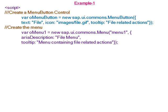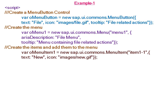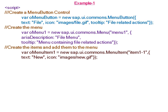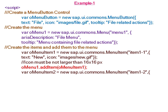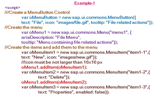Now we create the menu for this menu button with description 'File Menu' and a tooltip. We add three menu items to this menu: the first with text 'New' and an icon, the second with text 'Delete', and the third with text 'Properties' which is in a disabled state, with the enabled property set to false.